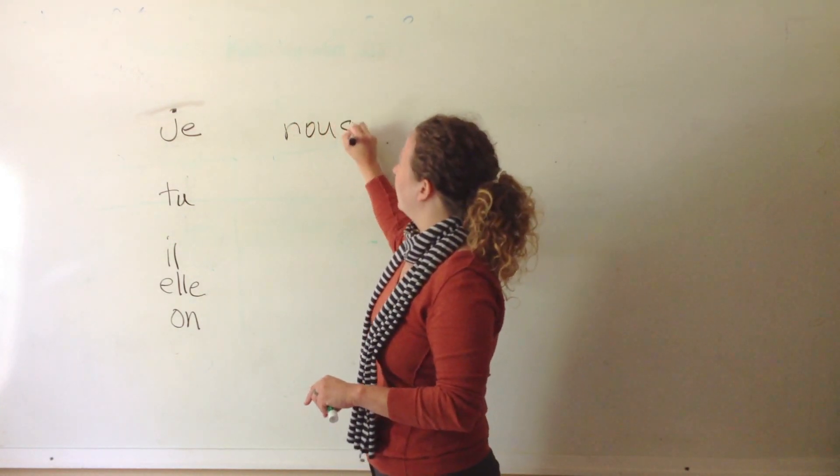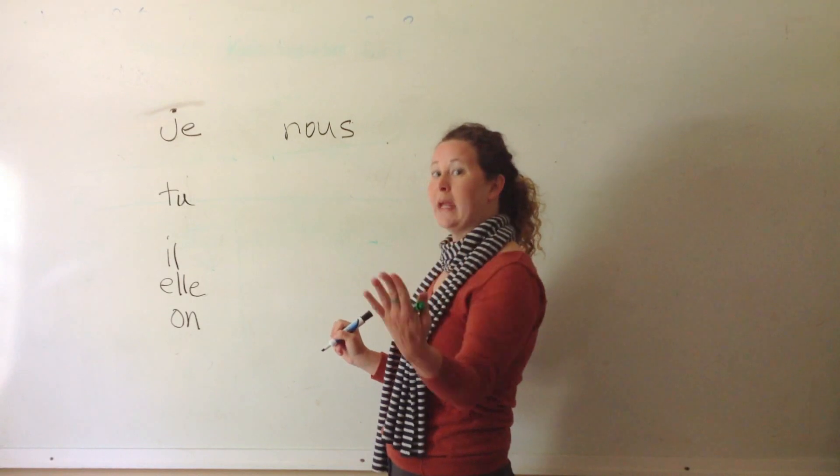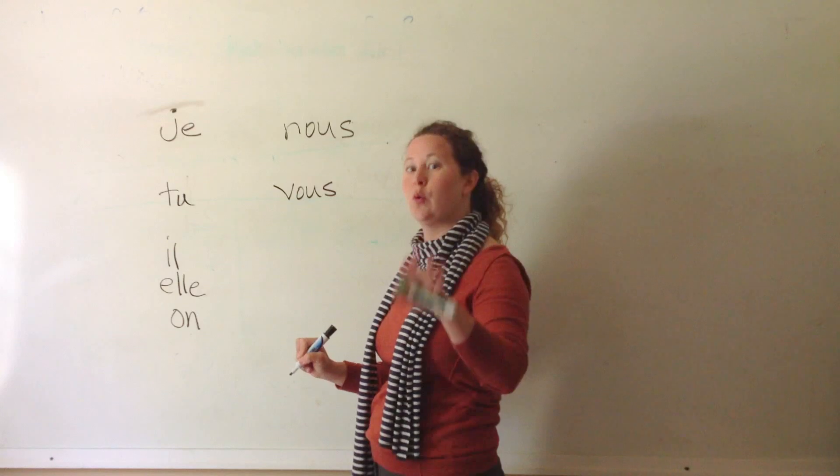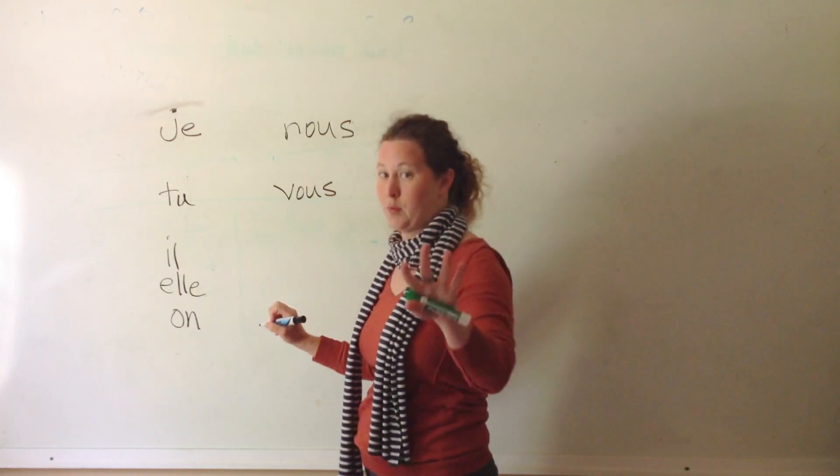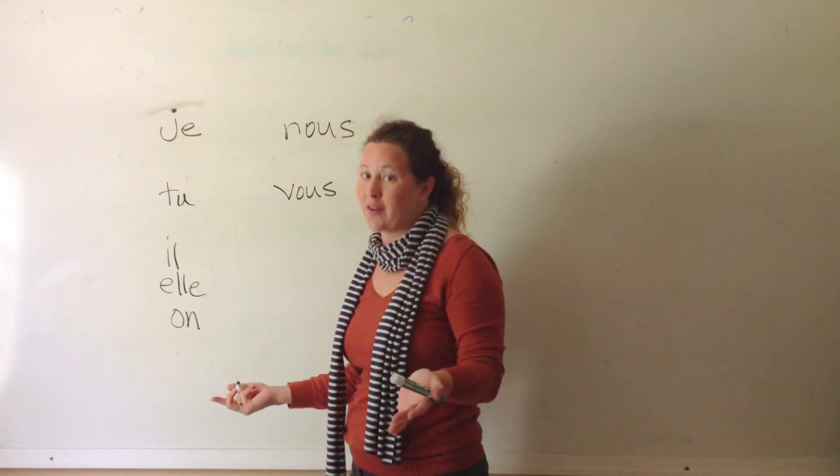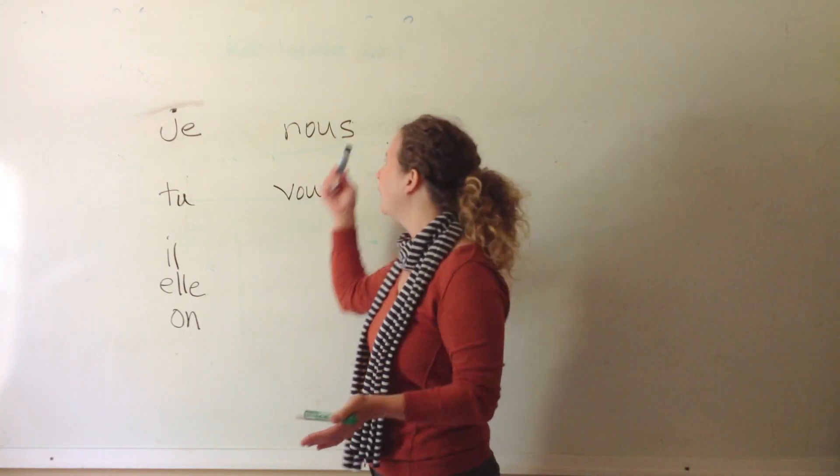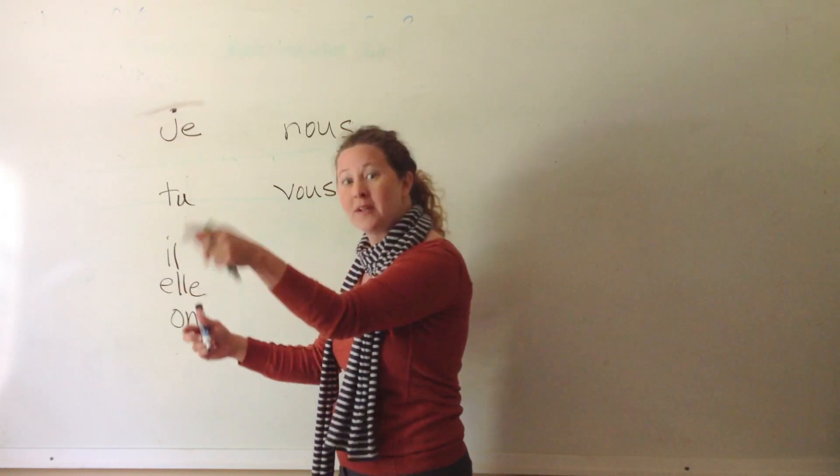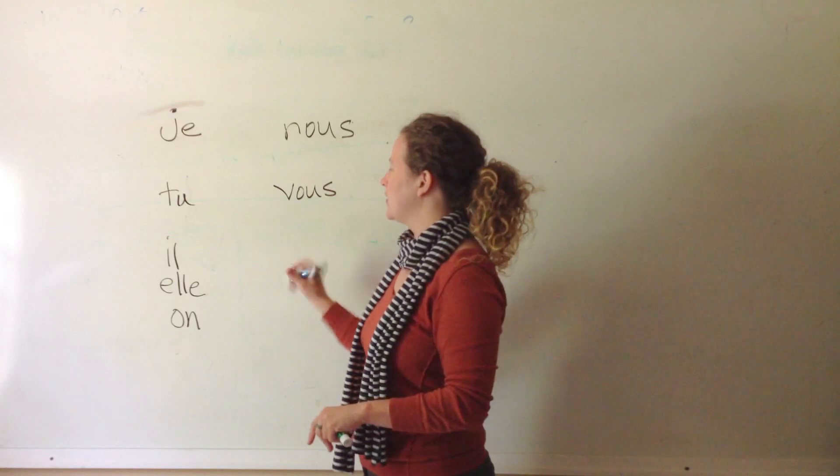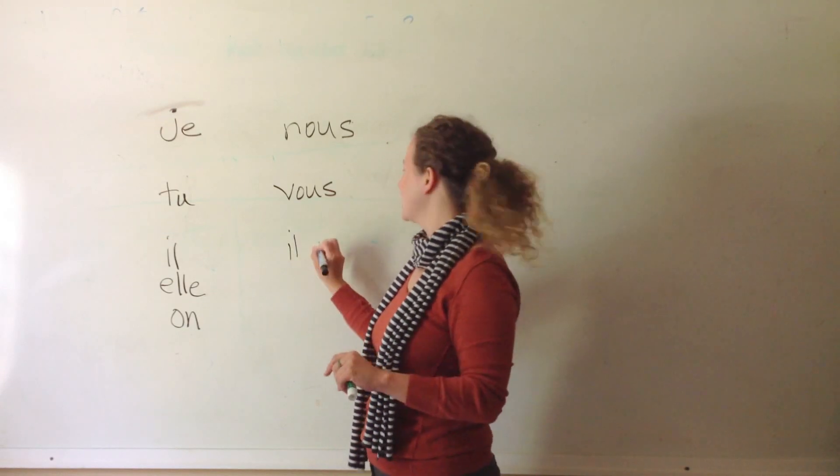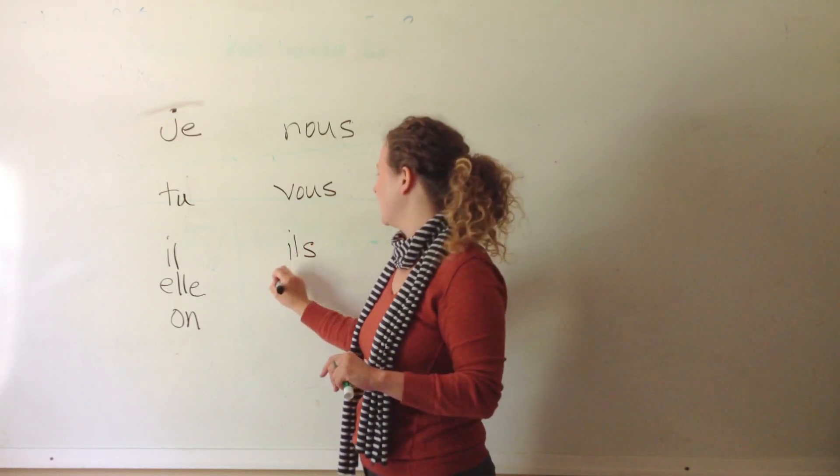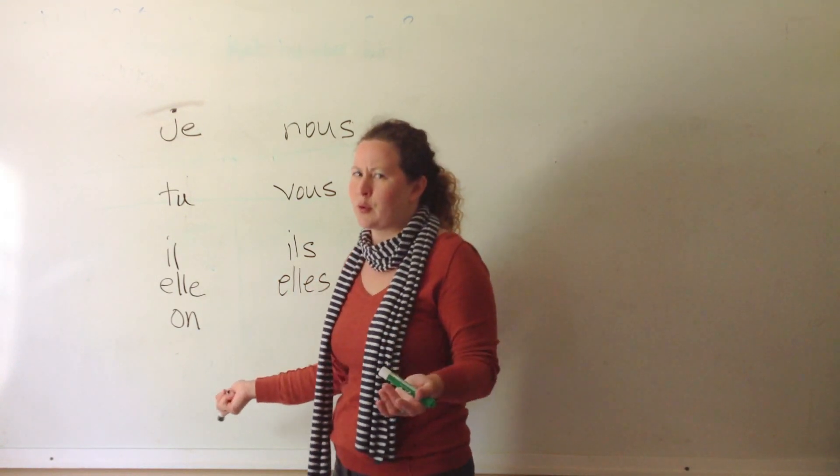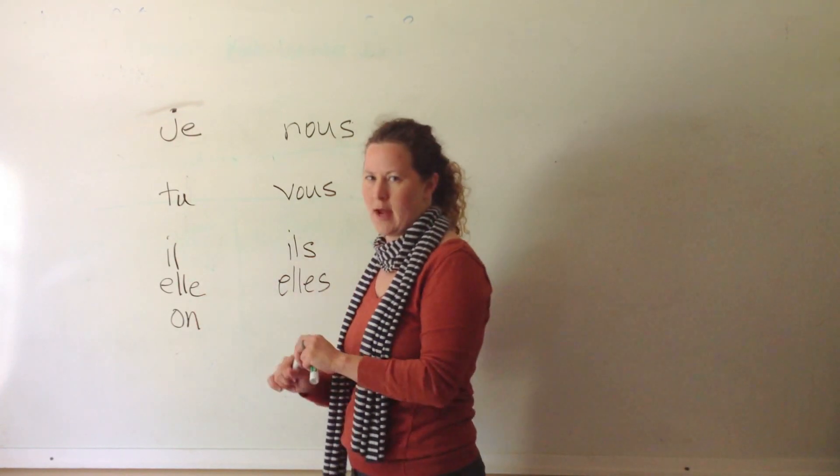Then you have nous. Nous. Which is we. Vous. Which is you or y'all. Formal. Or plural. And then just like in English, anytime you make something plural, you add an S. So, the plural way to say he and he, like if it's a whole bunch of guys, you would say they. So, the way to say that, add an S. Same thing here. Elle. But you don't pronounce the S. And then you can't make one plural. That doesn't work. So, one is only on that side.